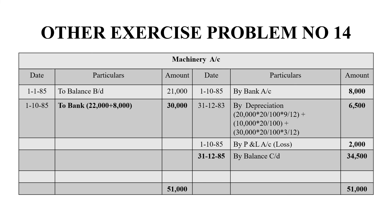And already we have met a loss with the first machinery — that is 2,000 rupees. The loss appears on the credit side. So we will get a balancing figure of 34,500 rupees on the credit side, and the grand total on both sides is 51,000 rupees.